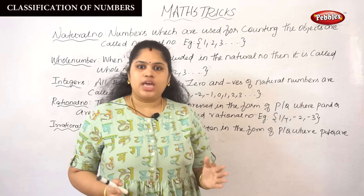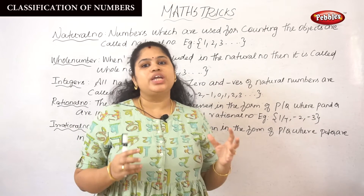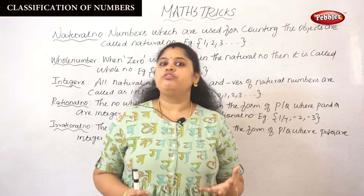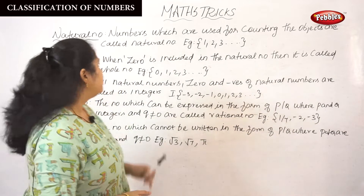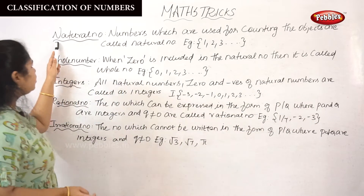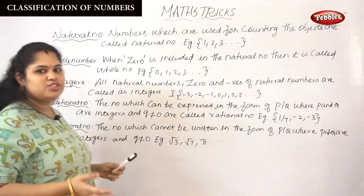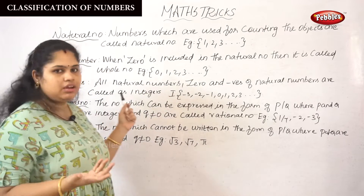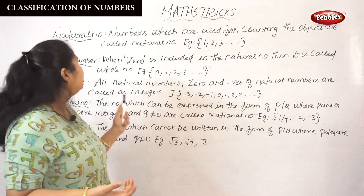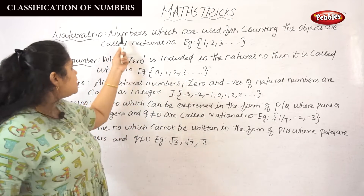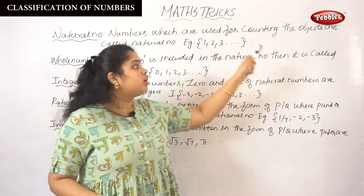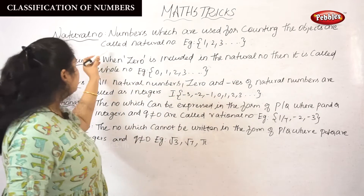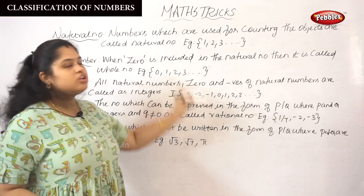Next, we are going to see about each and every classification of numbers in detail. Let's see about natural numbers. What is meant by natural numbers? This is nothing but numbers like 1, 2, 3. Numbers which are used for counting the objects are called natural numbers.